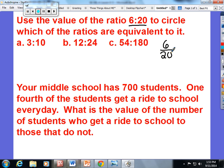6 and 20 are both even numbers so I know they're divisible by 2, and that gets us simplified to 3 over 10. And 3 and 10 are no longer divisible by the same number anymore. The value of the ratio 6 to 20 is 3 tenths.